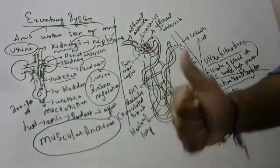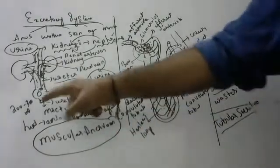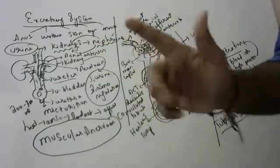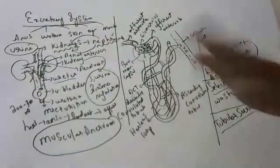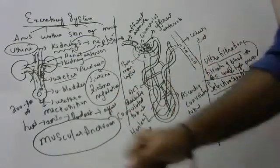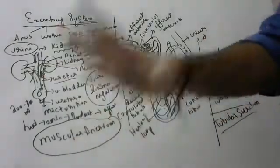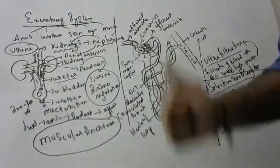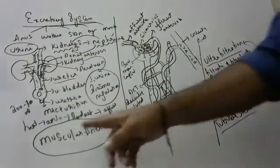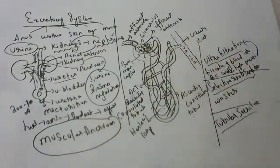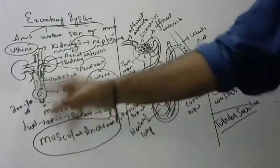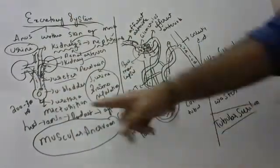How can we control the urine? Because the bladder is muscular and nervous - it has nerves. That is why we can control the urine for some time. We can control it up to a certain point, and after that we have to pass it out. And that passing out is called micturition.